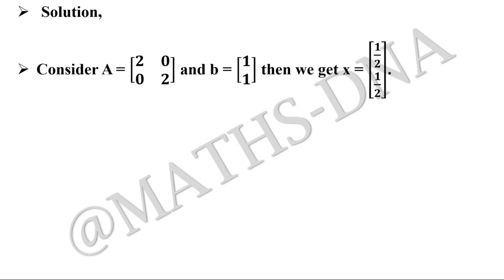Moving on to the solution, for the first one, we take a matrix A with entries 2, 0, 0, 2, and B as 1, 1. Then we get X as 1/2 and 1/2. Clearly we got a column vector, but the entries in the column vector of X are not integer, they are rational numbers, so the first one is not correct.